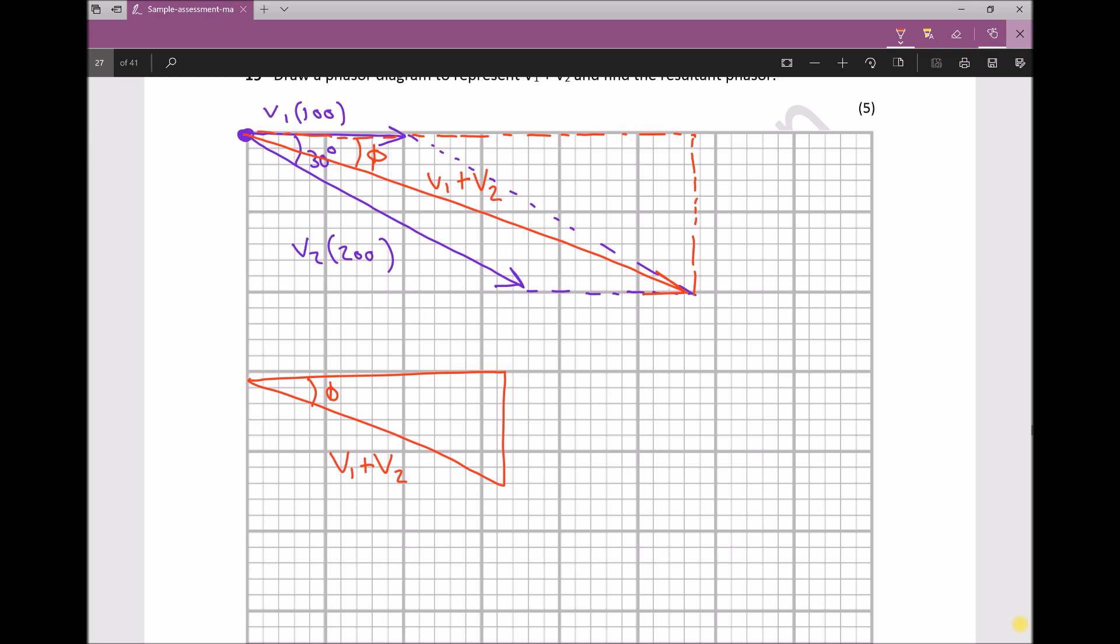The horizontal component is the sum of the horizontal components of V1 and V2. I'll label that as x. The side opposite the angle is the sum of the two y components of V1 plus V2, which I'll call y. So x equals V1x plus V2x, and y equals V1y plus V2y.